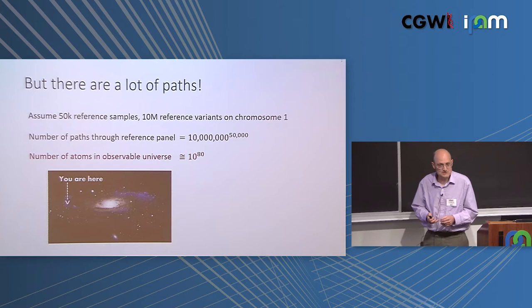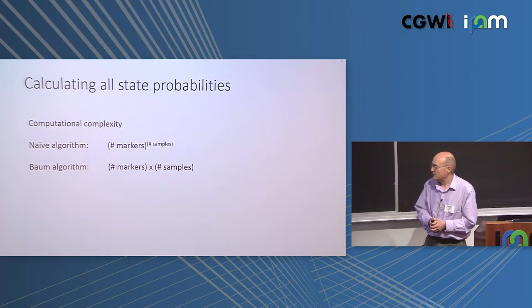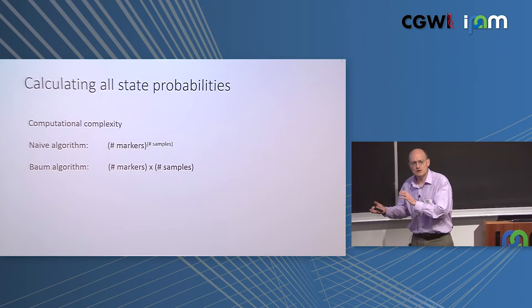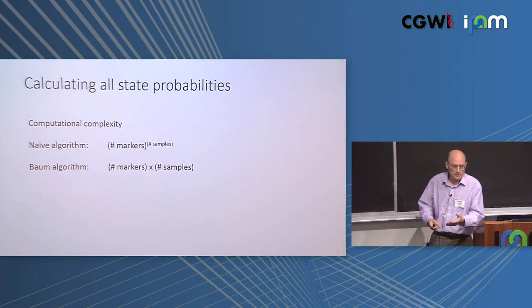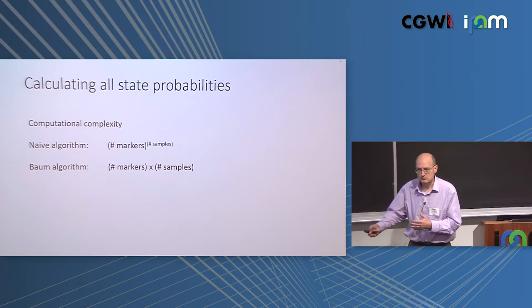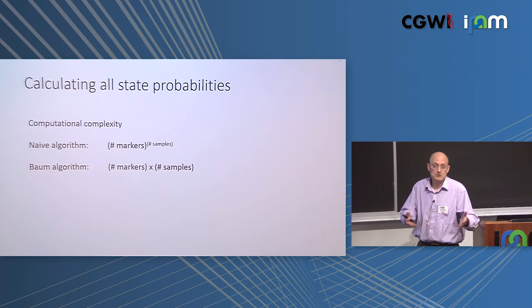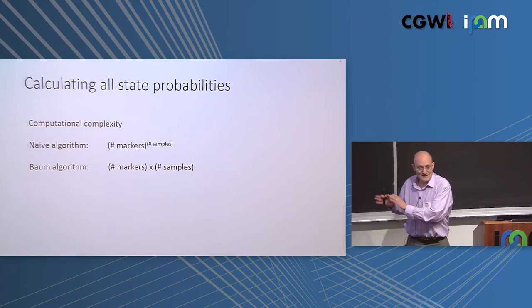It would be a non-starter if we didn't have amazing algorithms developed in the past. One of these is the Baum algorithm, which — when applied in this context because of the structure of the switch probabilities — gives a linear algorithm. The scale of improvement is remarkable: you get number of markers times number of samples. Double the markers, compute time goes up by two; double the samples, it goes up by two. And at the end, we'll see sublinear algorithms — we can actually do better than linear.